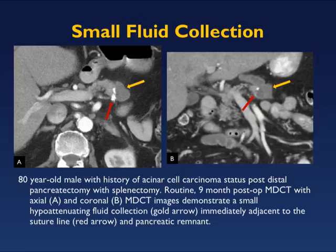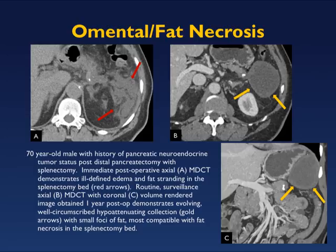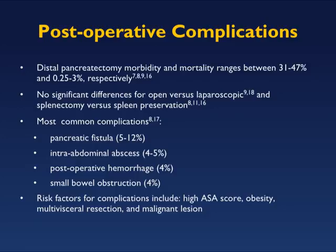Here's a classic example of omental infarction or fat necrosis — you see the mixed density soft tissue, the striations or septations, and the fat with mass effect. These omental infarcts typically remain constant over time; sometimes they resolve, but often they persist. They can occur by the surgical bed, push against the stomach, and be quite large. If you're unfamiliar with this finding, it's easy to mistake it for tumor recurrence.